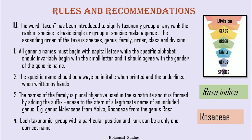The word 'taxon' has been introduced to signify a taxonomic group of any rank. The rank of the species is basic; a single or group of species makes a genus, followed by family, order, class, and division. All generic names must begin with a capital letter, while the specific name should invariably begin with a small letter and agree with the gender of the generic name. The scientific name should always be in italics when printed and underlined when written by hand.